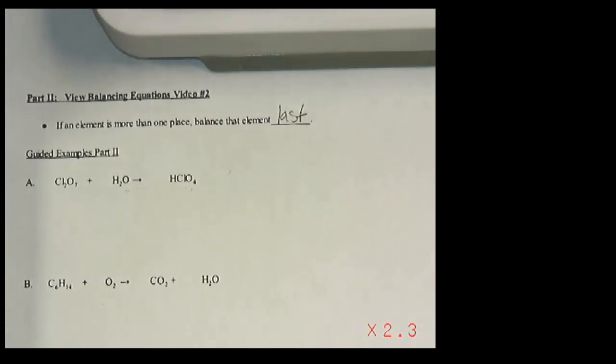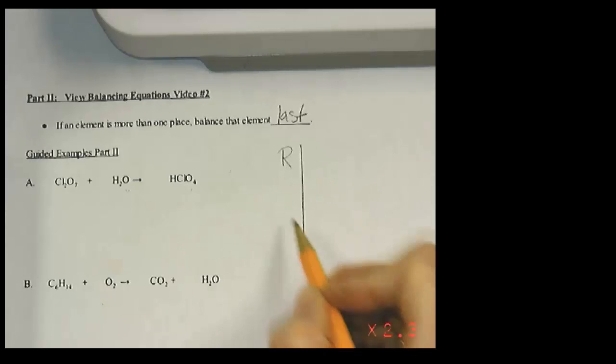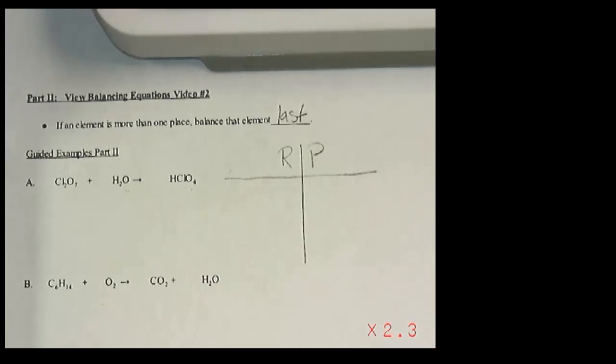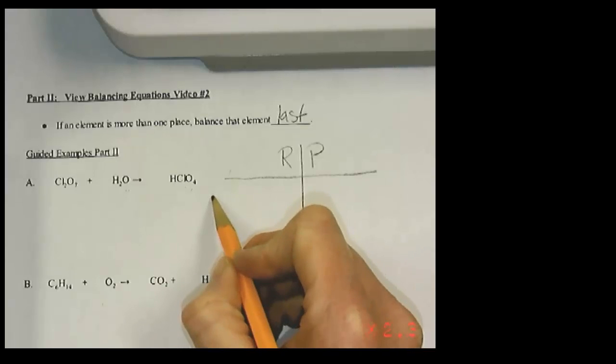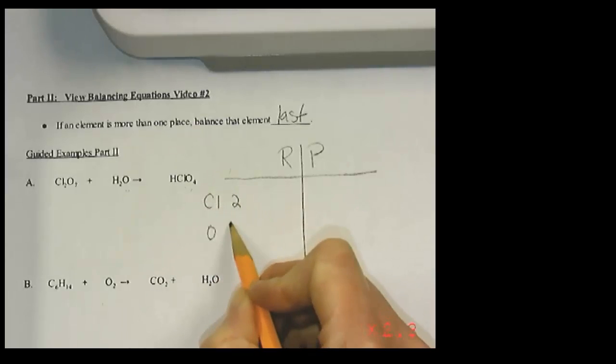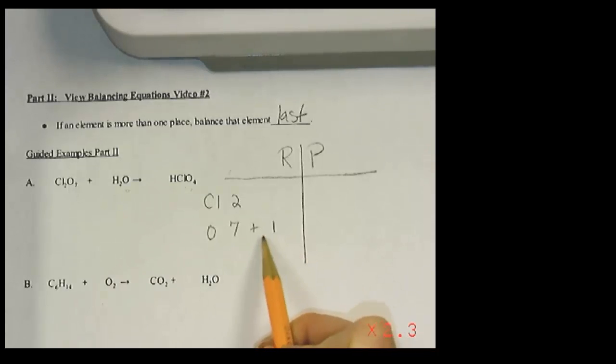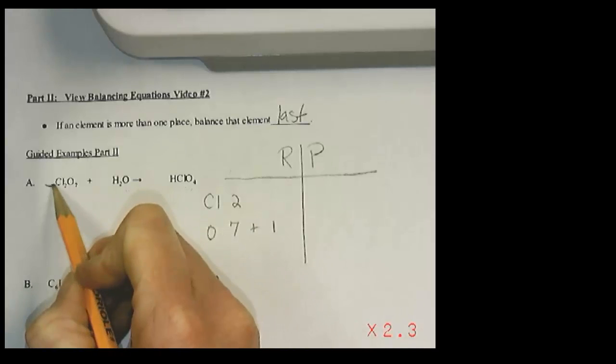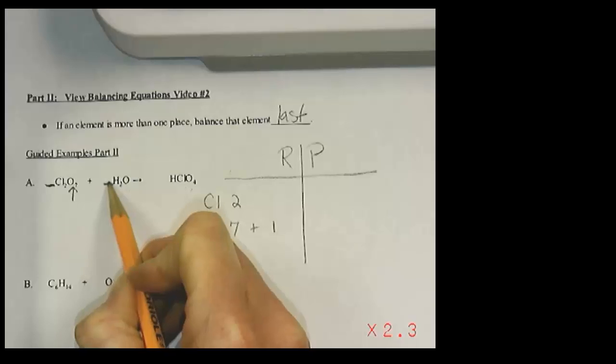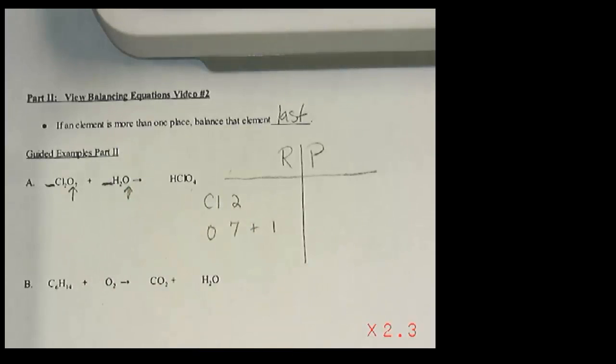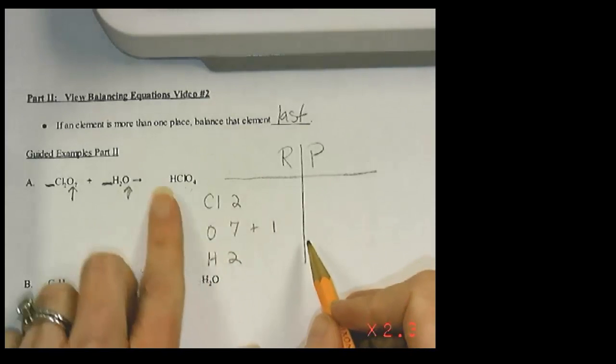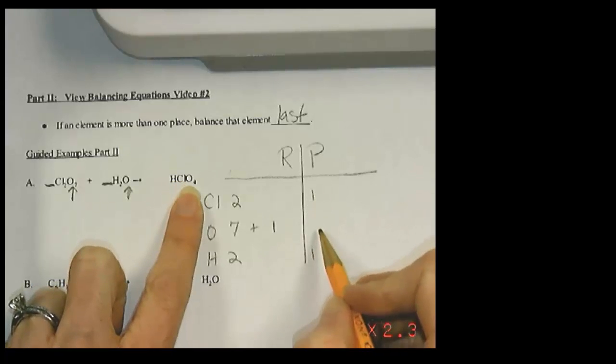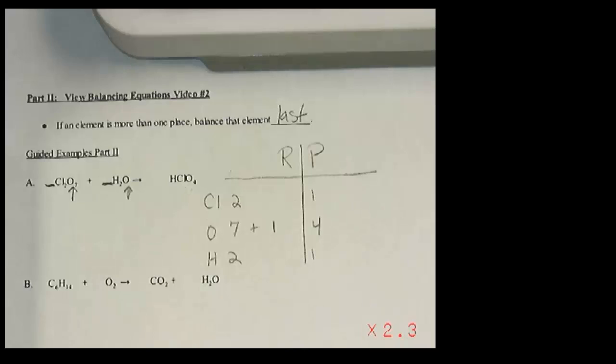So you'll always want to keep that one until the end because any changes you make to the other ones is going to affect possibly that element as well. So just like the other ones, we're going to start with a reactant product table. For chlorine, I have two. For oxygen, I have seven plus one. You want to leave yourself some room here because any coefficient I add to this one will only change this oxygen. Any coefficient I add here only changes this one. So I'm only going to multiply this by one or a number by seven. And then for hydrogen, there are two. On the product side, hydrogen is one, chlorine is one, and oxygen is four.